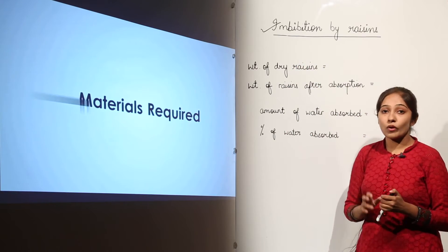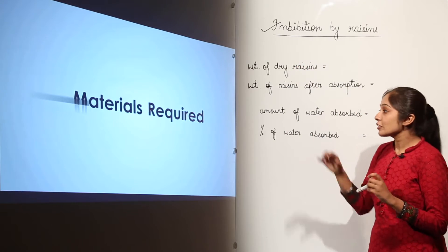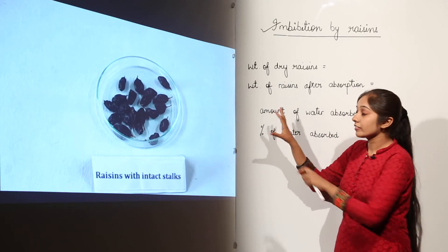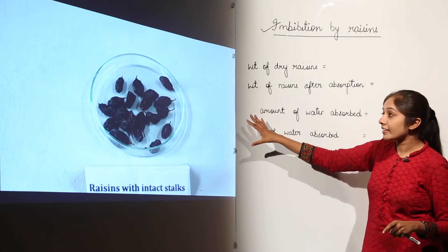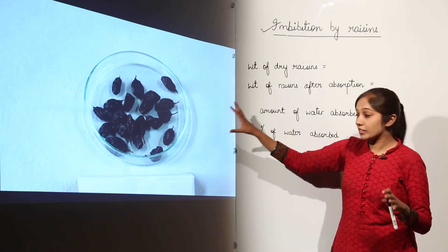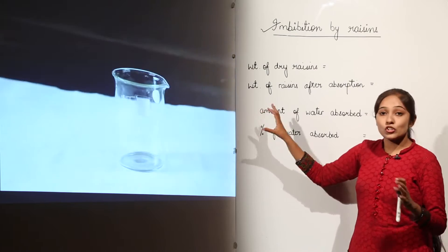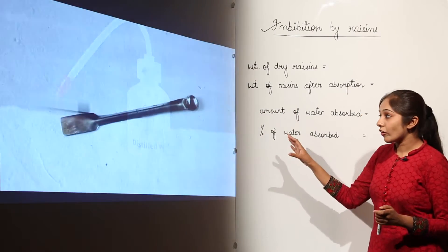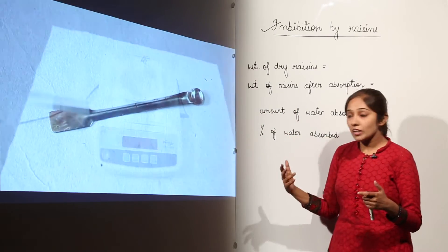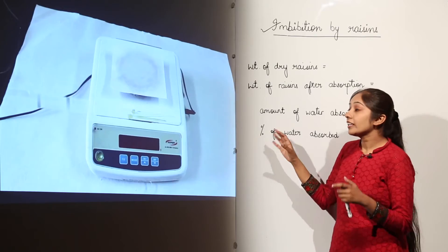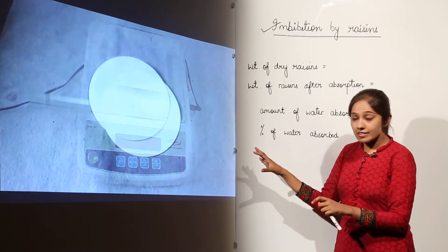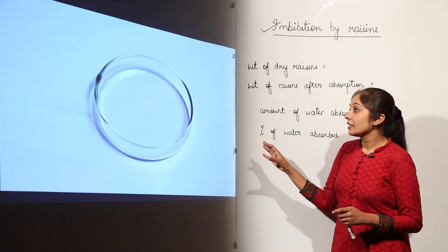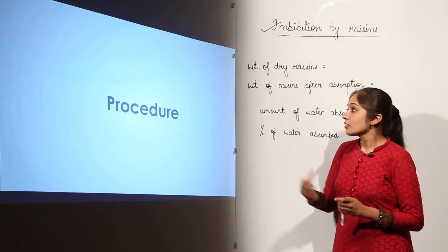The materials required are: raisins with intact stalks, a beaker, distilled water, a spatula, a weighing balance, blotting paper, and a petri plate.